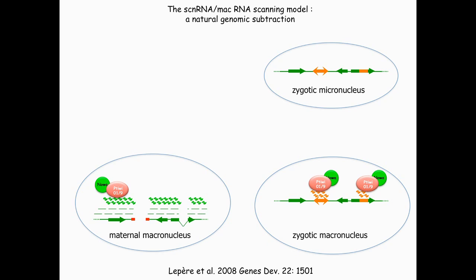Based on that selection, only the scan RNAs that could not find a match — the mic-specific scan RNAs — are going to be re-exported to the developing mac, where they can target elimination of the homologous DNA sequences. This elimination does not occur directly. We think this goes through pairing interaction with nascent transcripts, which, like in many other eukaryotes, leads to the deposition of epigenetic marks in these sequences. These epigenetic marks will be recognized by the excision complex containing the PiggyMac and then cleaved out. We now know, thanks to the work of Sandra Duharcourt, that EZL1 is responsible for histone H3K9 and K27 methylation, and that this is absolutely required for rearrangement at least in a fraction of IESs.